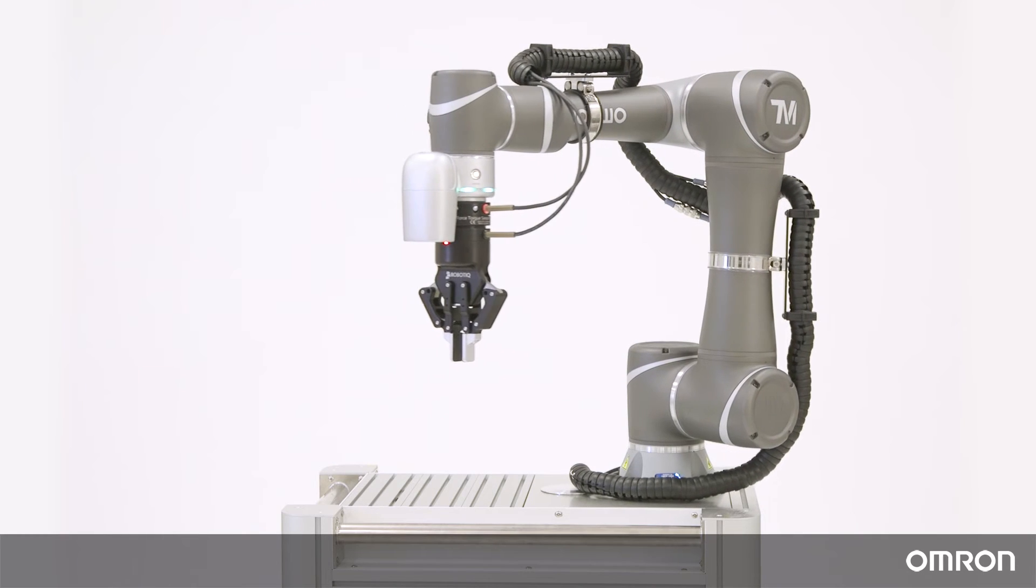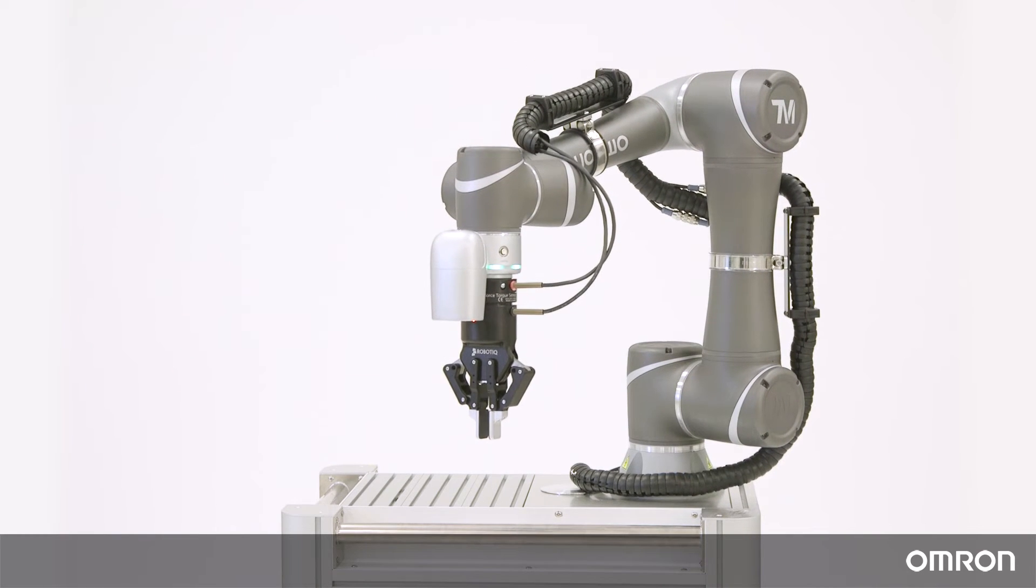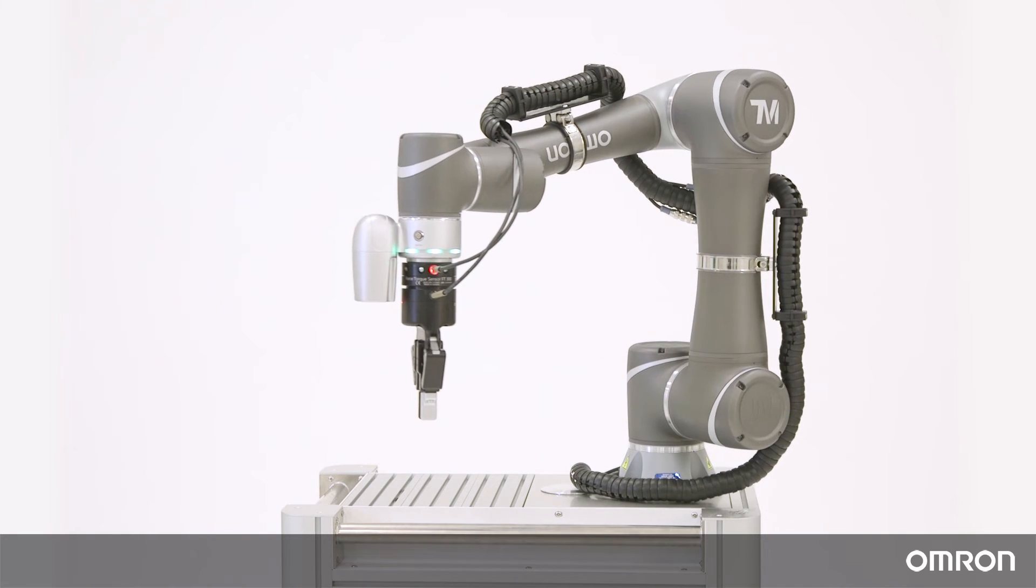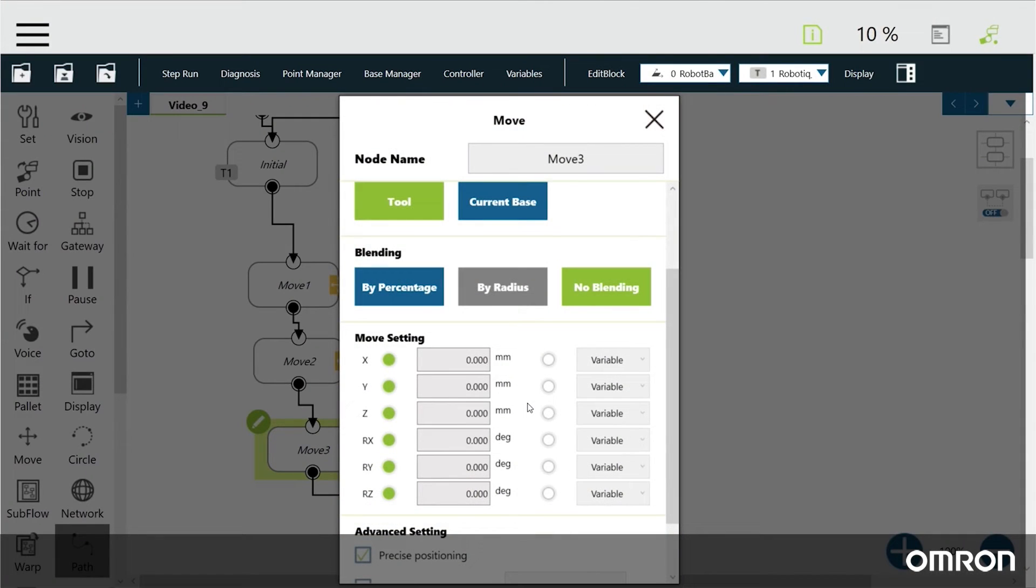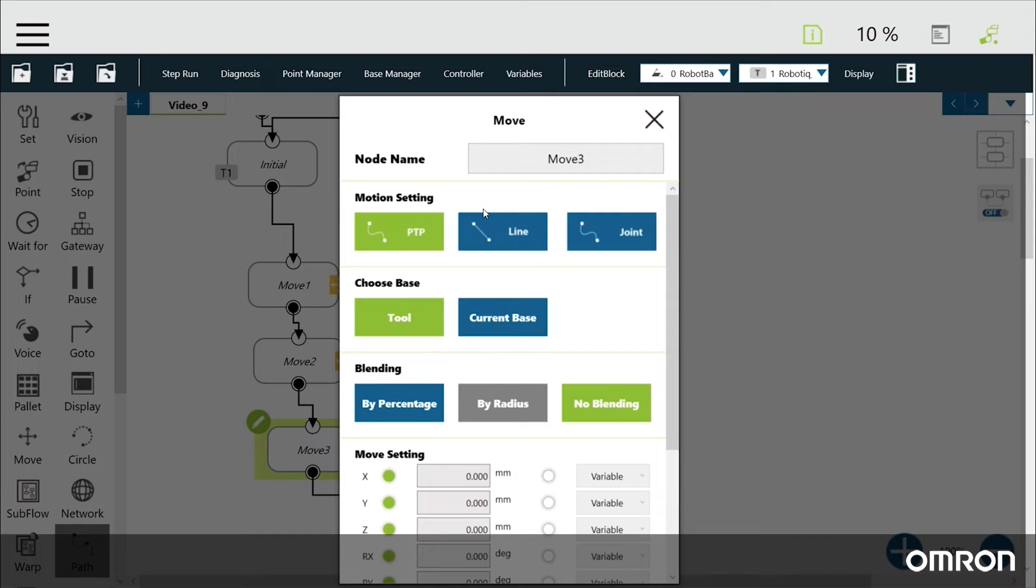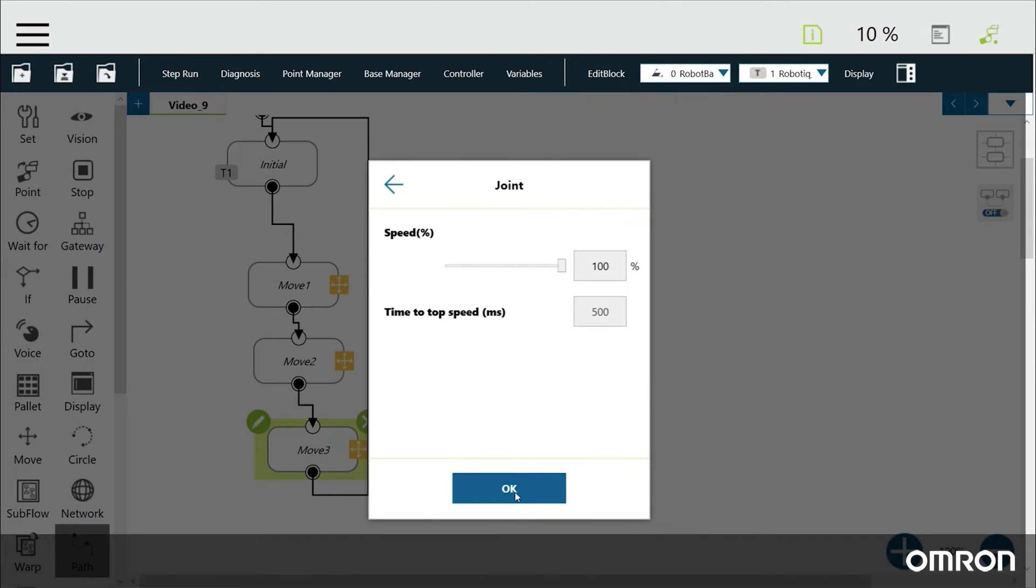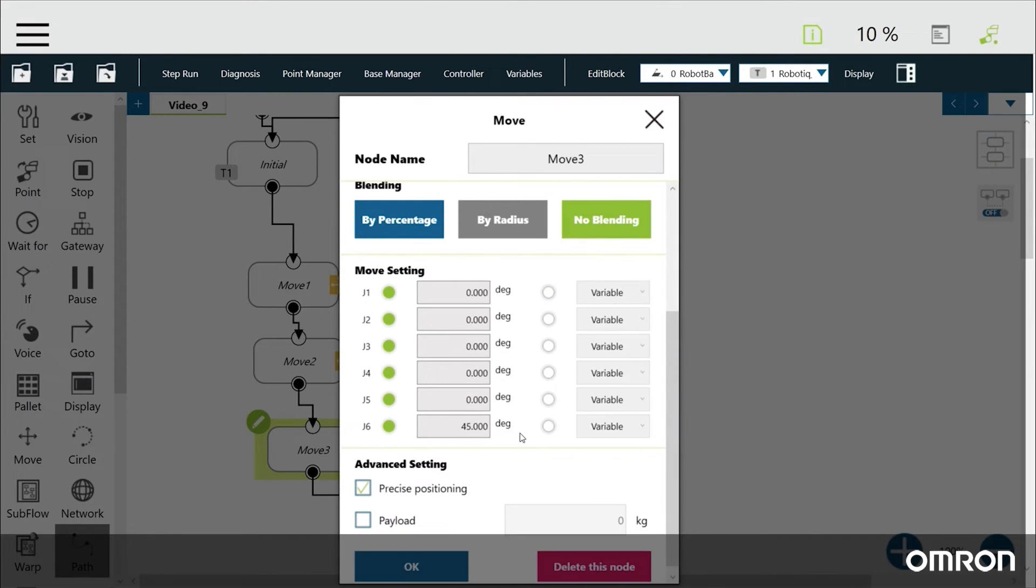While point nodes are absolute motion commands, move nodes are relative motion commands. The move node can be used to make a relative move in Cartesian coordinates along the tool base or the current base. The move node also allows the cobot to move relatively in joint space.